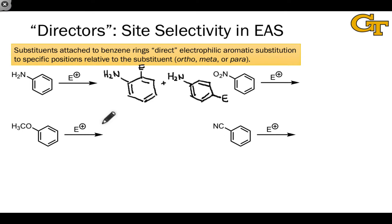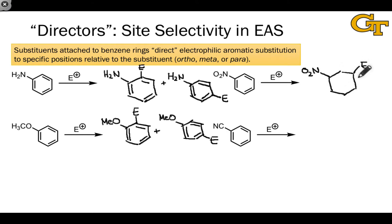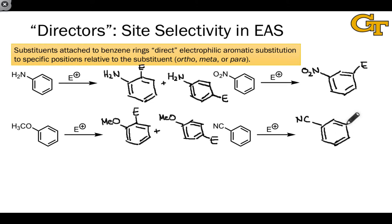We observe the same thing in reactions of anisole. We don't see any meta product formed; the only products we see are the ortho and para products. The two molecules on the right lead to a different situation. Nitrobenzene, which reacts considerably more slowly than the two molecules on the left, gives only the meta-substituted product in reactions with electrophiles. And cyanobenzene displays the exact same thing — it reacts more slowly than benzene and the electron-rich benzenes on the left, and gives only the meta-substituted product.